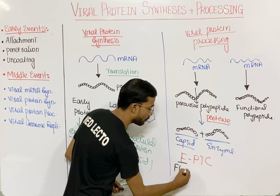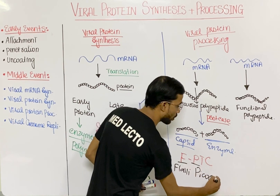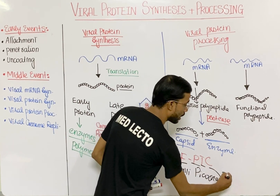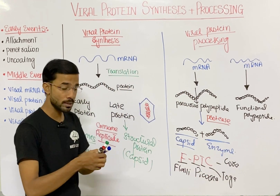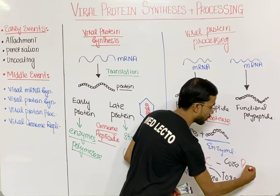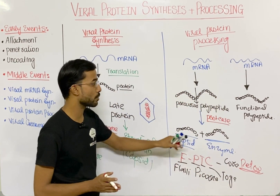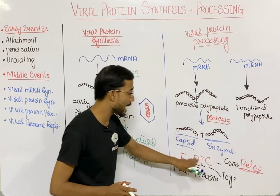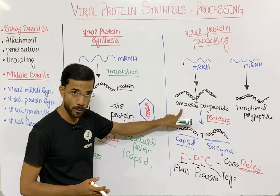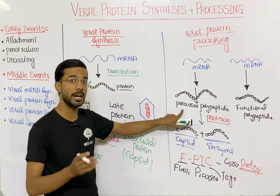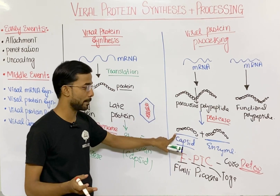The virus families that produce protease include: Flavivirus (F), Picornavirus (P), Togavirus (T), and Coronavirus (C) — the FPTC families. The Retrovirus family also produces protease. These families produce protease because they form the precursor polypeptide, which must be cleaved into the functional polypeptide.